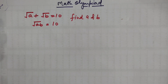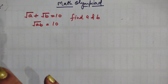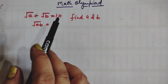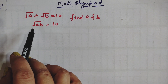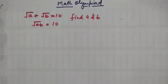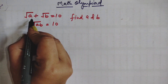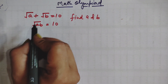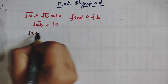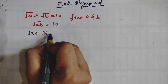So here we need to find the value of A and B. How to find these values? First of all, you can see there are two equations of algebra: root of A plus root of B equals to 10, and we need to find the value of A and B.